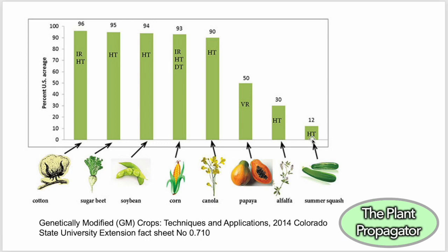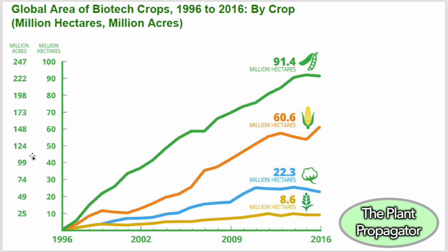There's also herbicide-tolerant alfalfa, and virus-resistant summer squash — only about 12% in the U.S., and remember this data is a little bit older. Looking globally now — this goes from 1996 to 2016 and shows number of hectares for soybean, corn, cotton, and canola. In corn especially, it's not a huge percentage of global acreage — globally it might be about 30%. Soybean acreage is pretty high globally — most soybean is produced in the U.S., Argentina, and Brazil, and all of those countries have adopted GMO soybean.